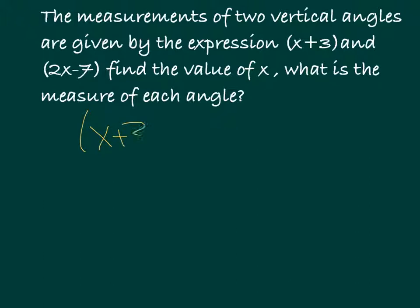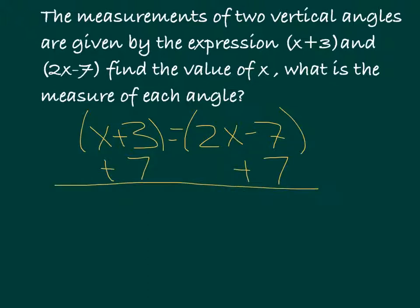x plus 3 equals 2x minus 7. It's actually quite easy, it's just a review from middle school. What you do to one side, you do to the other. The opposite of subtracting is addition, so we would add in this case and end up with x plus 10 equals 2x.